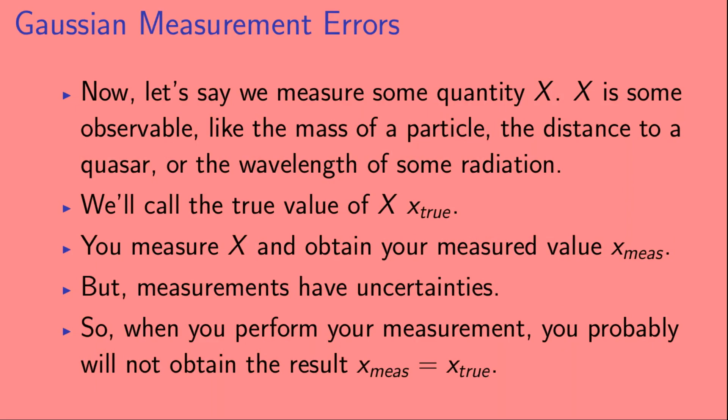Now, let's say we measure some quantity X. X is some observable, like the mass of a particle, the distance to a quasar, or the wavelength of some radiation. We'll call the true value of X, x_true. You measure X and obtain your measured value, x_meas. But measurements have uncertainties. So, when you perform your measurement, you probably will not obtain the result x_meas equals x_true.